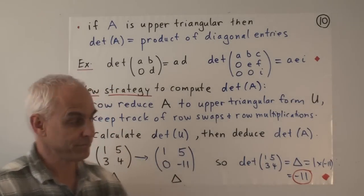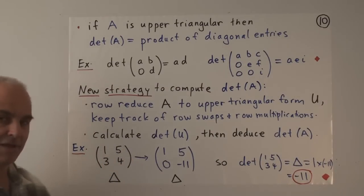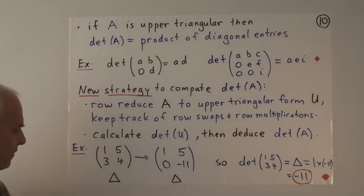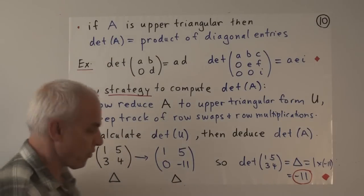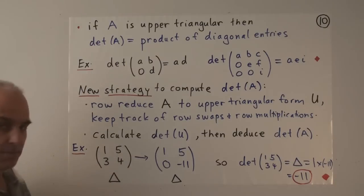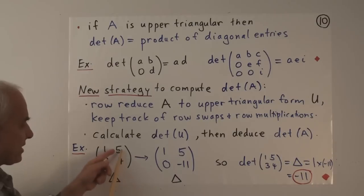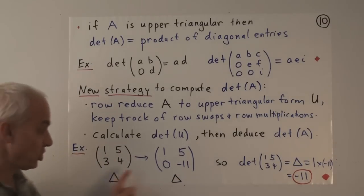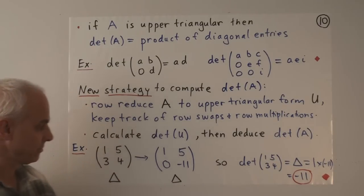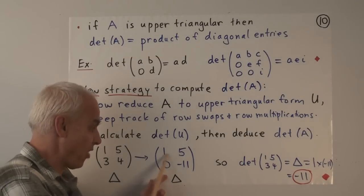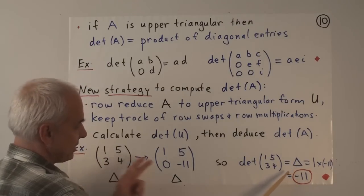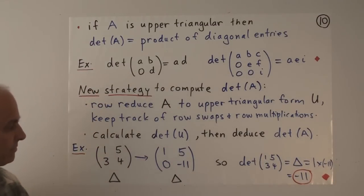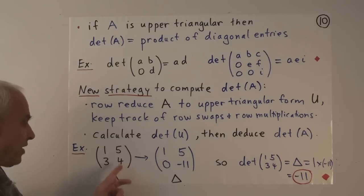As an example, suppose we start with the 2×2 matrix [1, 5; 3, 4], and let's call its determinant δ. The first thing we do is row reduce it: take the second row and subtract 3 times the first row. So 3 minus 3·1 = 0, and 4 minus 3·5 = −11. That operation has not changed the determinant, so this new matrix also has determinant δ. But this upper triangular matrix has determinant equal to the product of its diagonal elements — namely, 1 times −11, which is −11. So δ = −11.